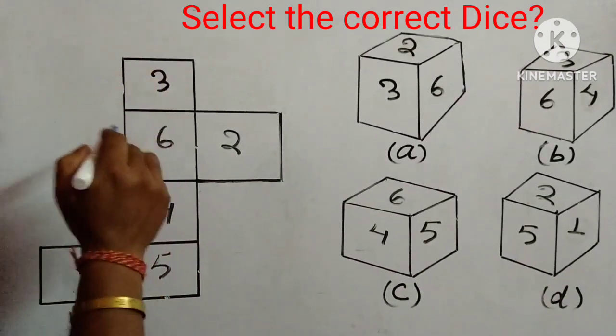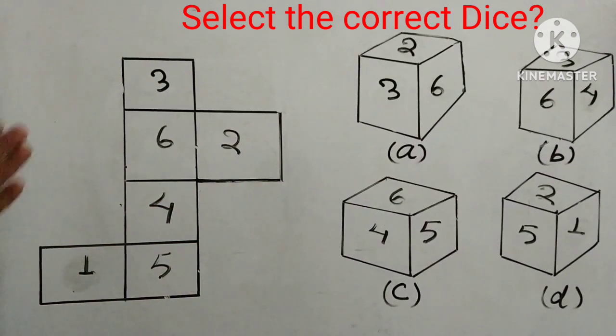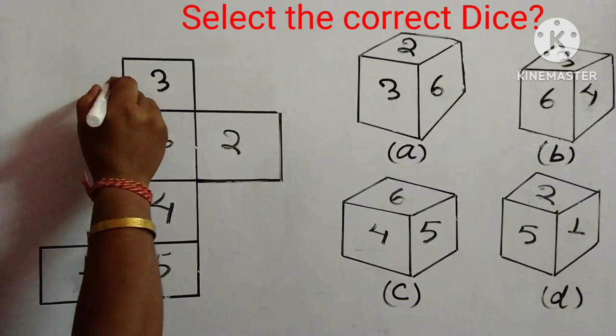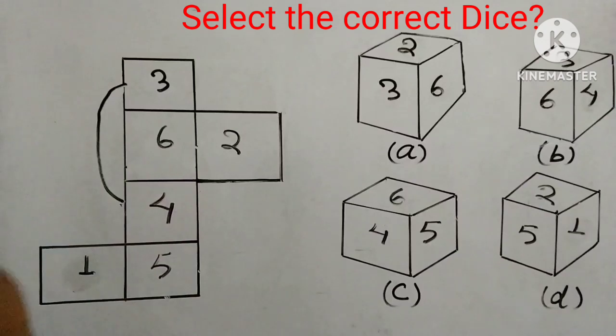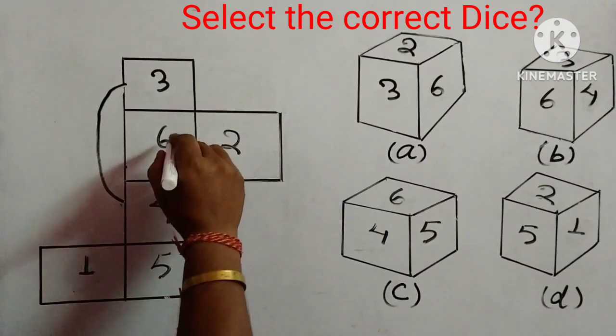See, here number 3, 6, 4, 5, 2 and 1 is given. Now, whenever this pattern of dice is given, now what we look for, the alternate ones are the opposite pairs which you have to remember. And I have explained in a lot of my videos.